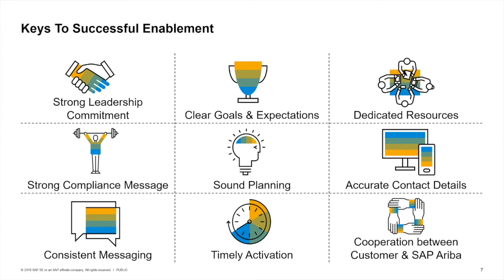Next is clear goals and expectations. By setting clear goals and expectations, everyone in your organization is working and contributing towards the same successful outcome with your supplier enablement program. Your organization also needs dedicated resources committed to the program and the achievement of those goals. A strong compliance message for both your internal users and suppliers is also critical, with expectations and consequences clear to everyone.